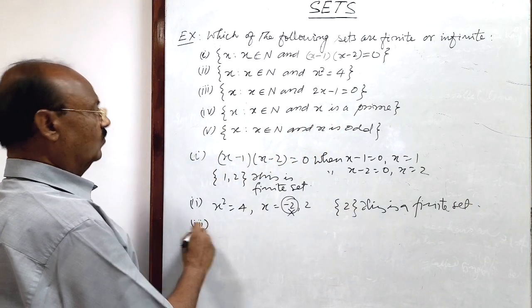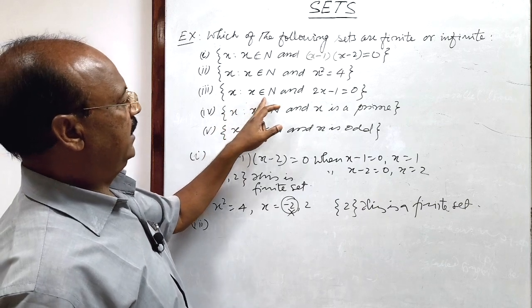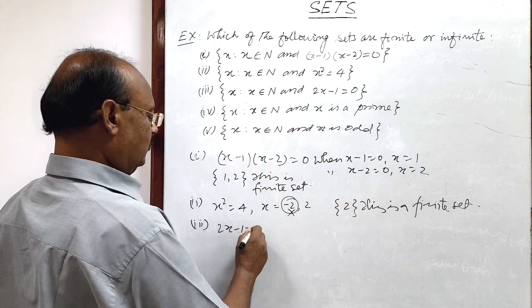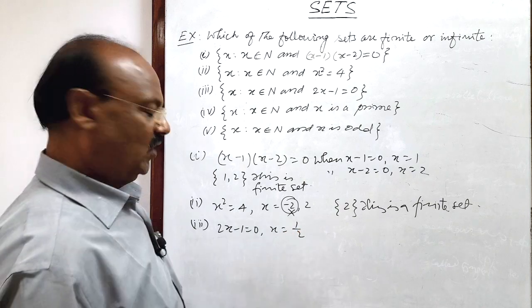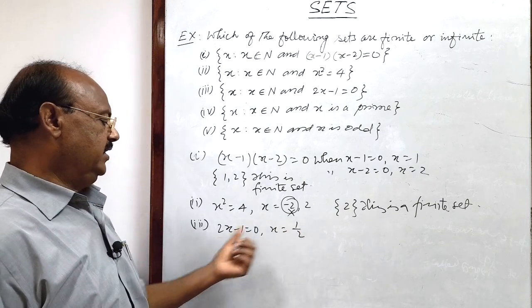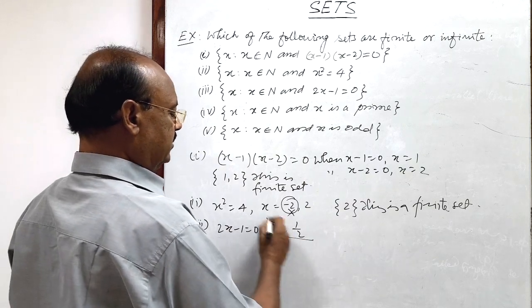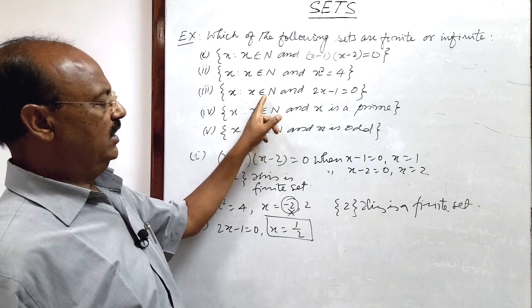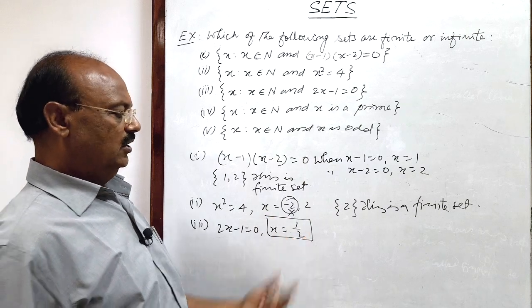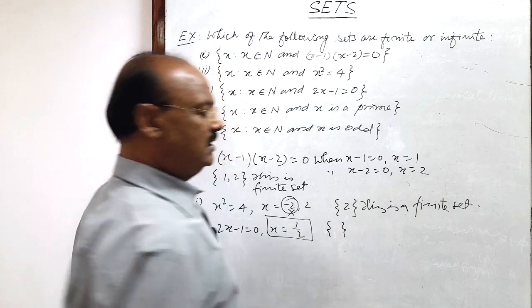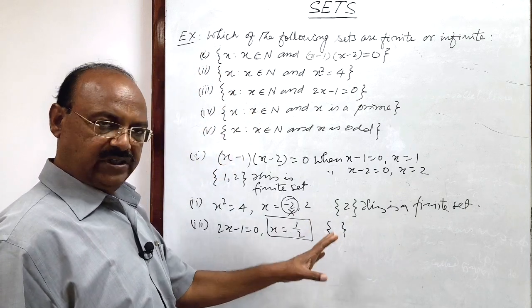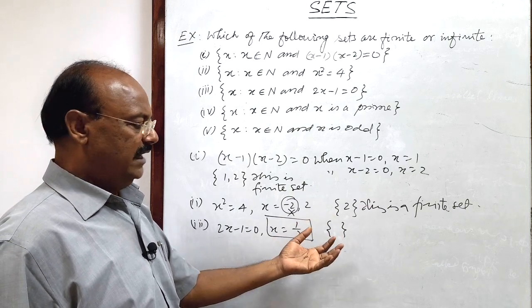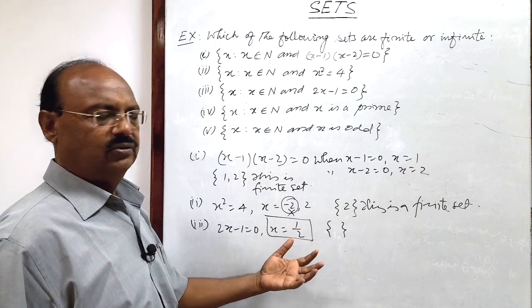Third question: the set of x such that x belongs to natural numbers and 2x − 1 = 0. If 2x − 1 = 0, then x = 1/2. Since 1/2 is not a natural number, this value of x is not acceptable. So the set will be a null set — an empty set — but it is still called a finite set, because the number of elements is not infinite.